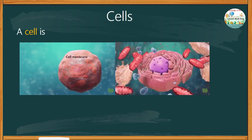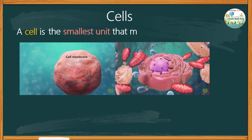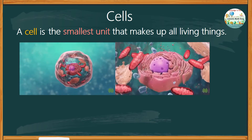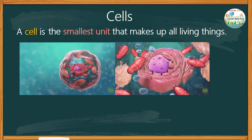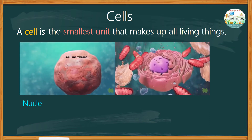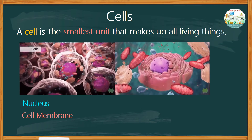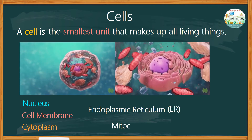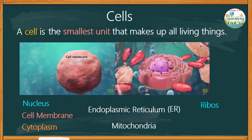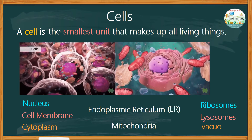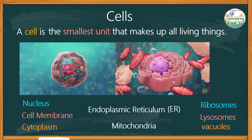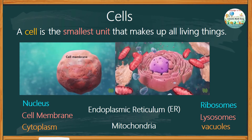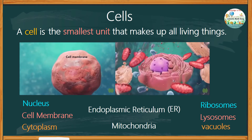What is a cell? A cell is the smallest unit that makes up all living things. In this video, we are going to take a closer look at the nucleus, cell membrane, cytoplasm, endoplasmic reticulum or ER, mitochondria, ribosomes, lysosomes, vacuoles, and other organelles. A short exercise is provided towards the end of this video, so stay with me and let's get going.